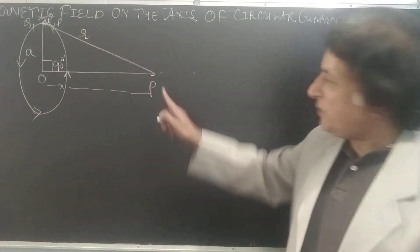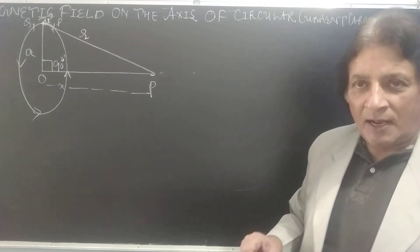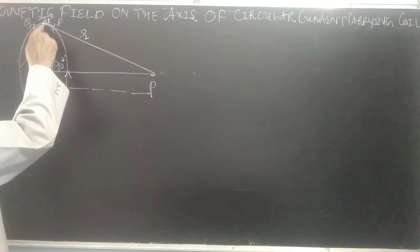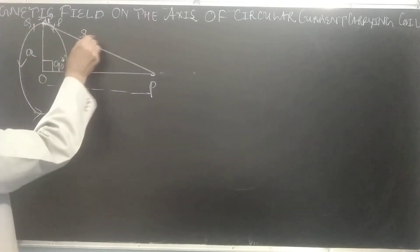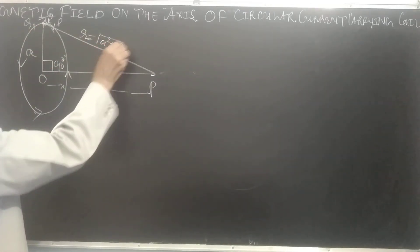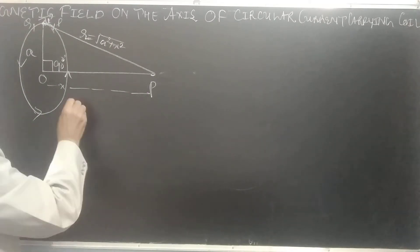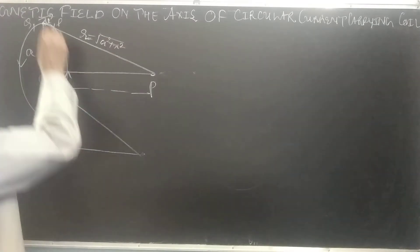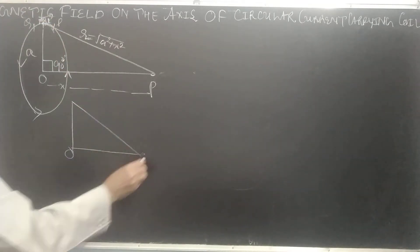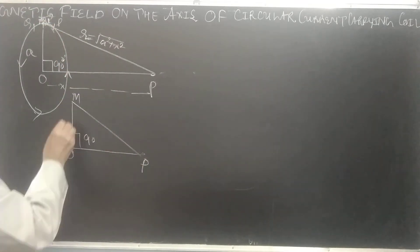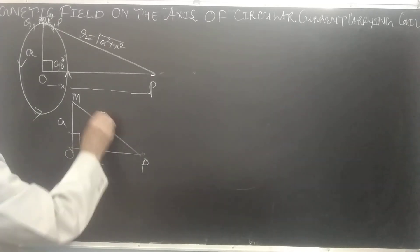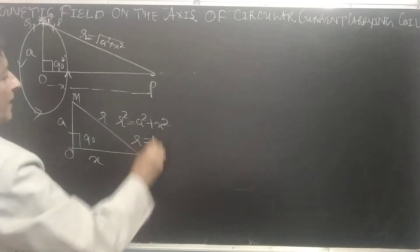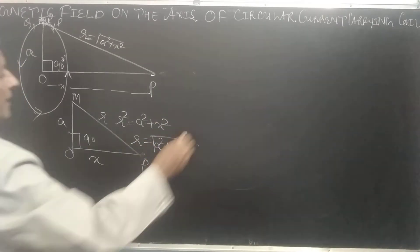At point P we find the magnetic field. Using Pythagoras theorem: A² + X² = R², so R = √(A² + X²). Look, this is a right angle triangle - this is O, this is M, this is 90 degrees, this is A, this is X, this is R. So R² = A² + X², therefore R = √(A² + X²).